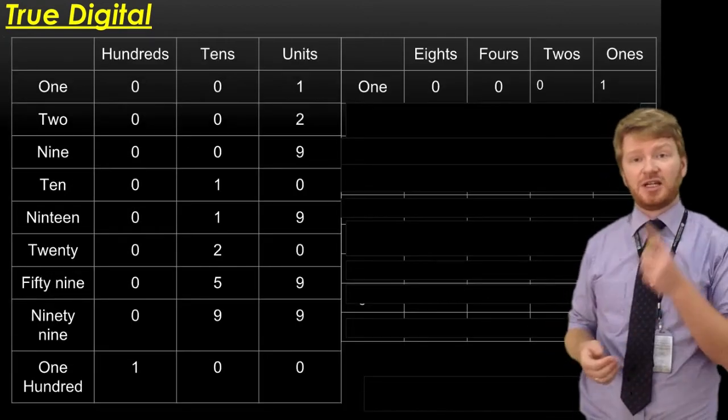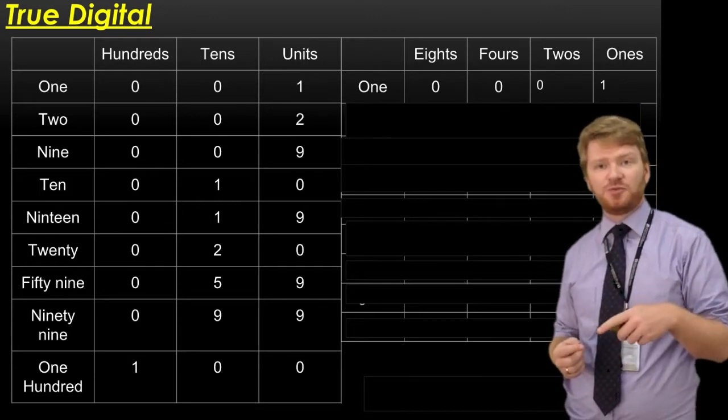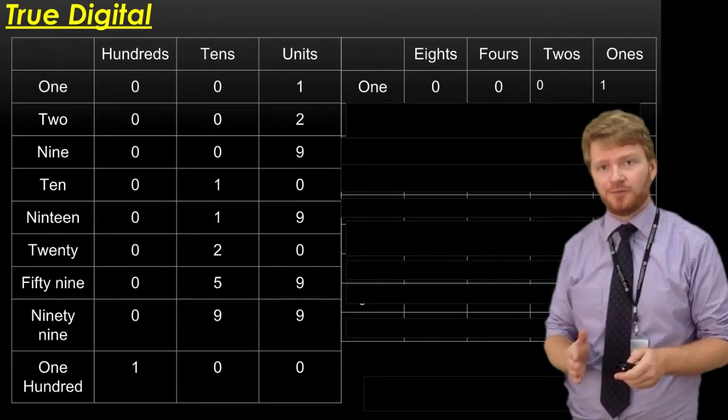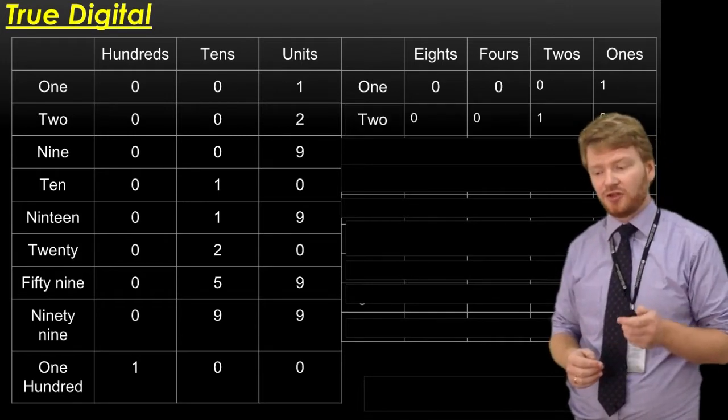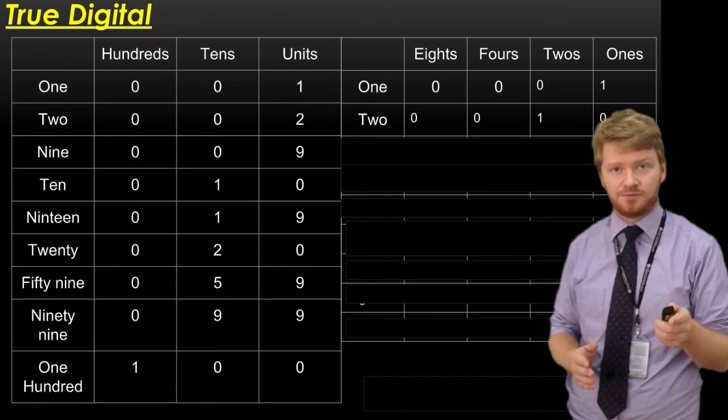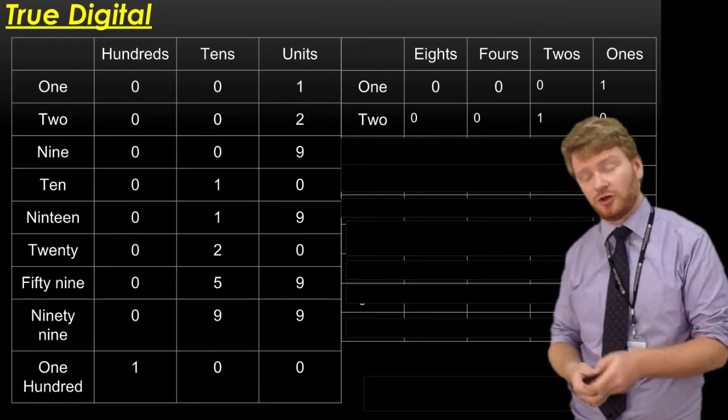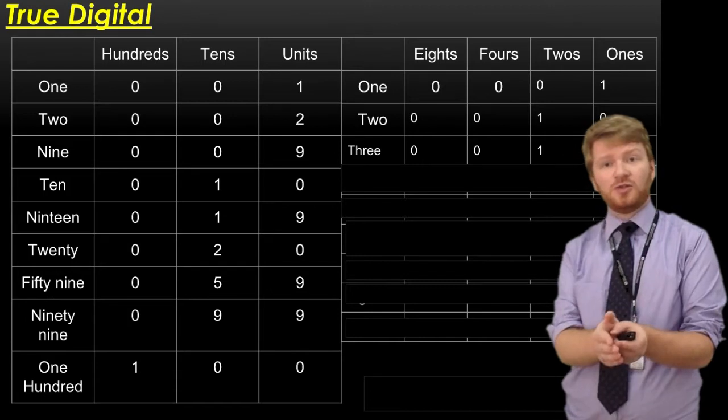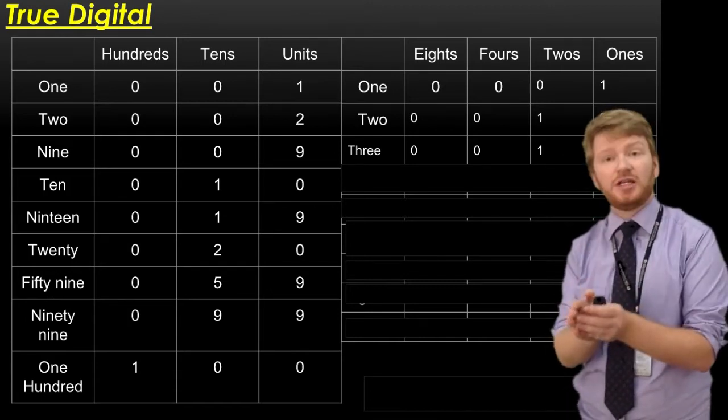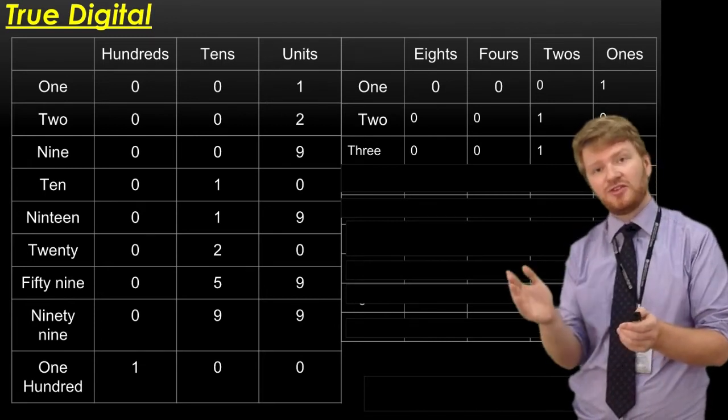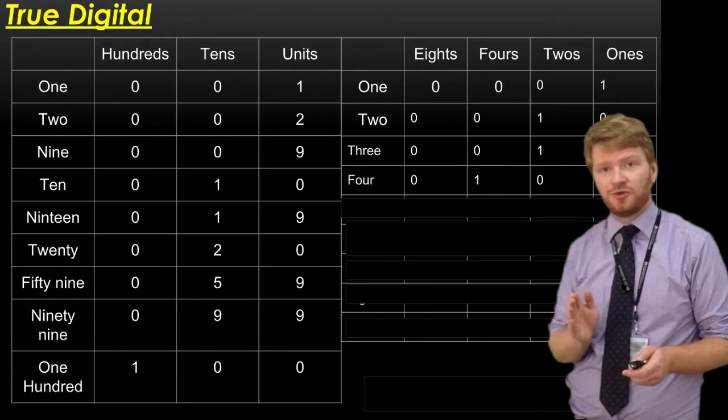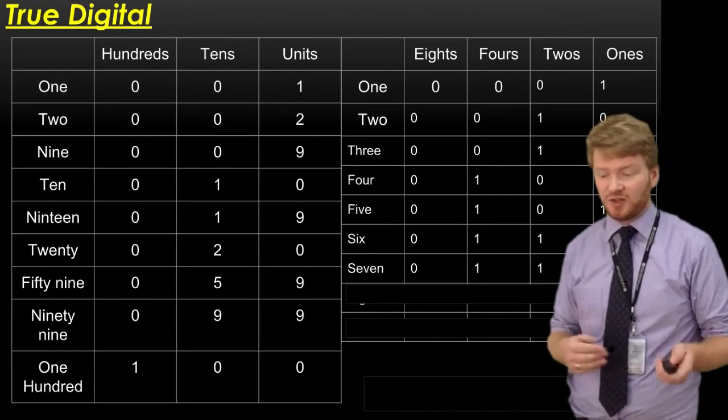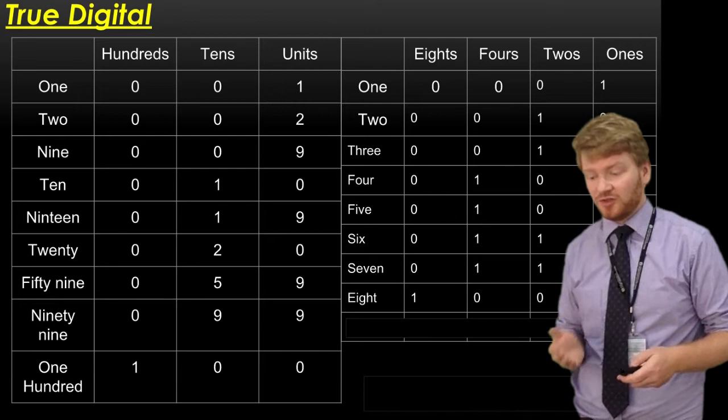So how does that work with numbers? 1 looks exactly the same - I have a 1 in my 1s column. But if I want to put the number 2 in, I've only got a digit of 0 or 1. I can't put anything in my 1s column, so I have to go to the next column over. So 2 becomes 1,0. 3 becomes 1,1. If I want to record 4, I can't put anything in the 1s column because that's full, can't put anything in my 2s column because that's full. So it becomes 1,0,0. You should now see the pattern developing. 5 becomes 1,0,1. 6 becomes 1,1,0. 7 becomes 1,1,1. 8 becomes 1,0,0,0.